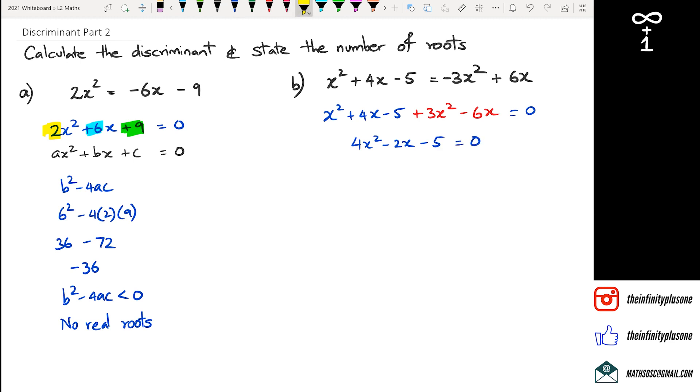So once again I'm going to take my a value as positive 4, b as -2, and c as -5. So I'm going to put this in my discriminant formula, which is b² - 4ac.